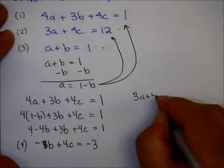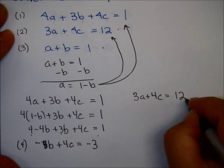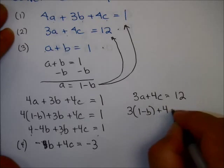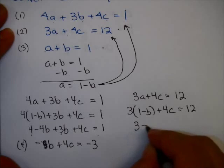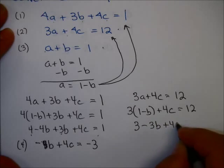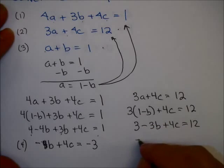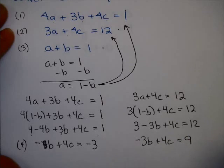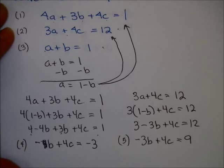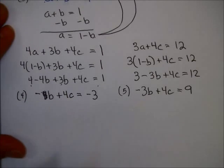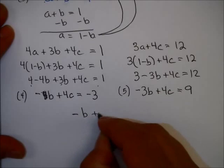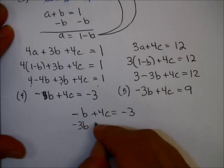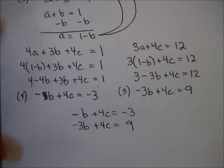Using this value for A in equation 2 — originally equation 2 is 3A plus 4C equals 12 — that's 3 times (1 minus B) plus 4C equals 12. That's 3 minus 3B plus 4C equals 12, which gives minus 3B plus 4C. Subtracting 3 from each side, I get 9. I'm going to call this equation 5. Now I have two equations with two variables.